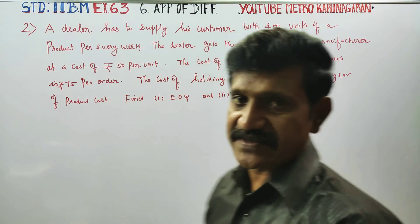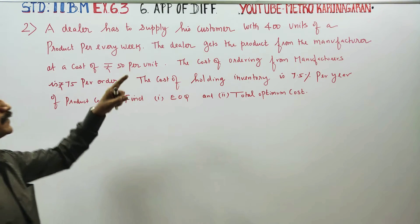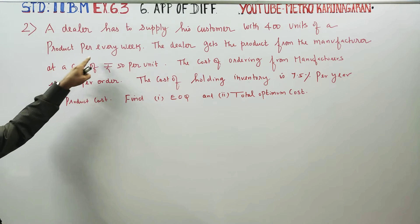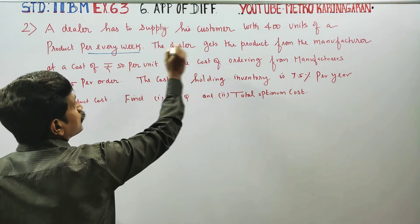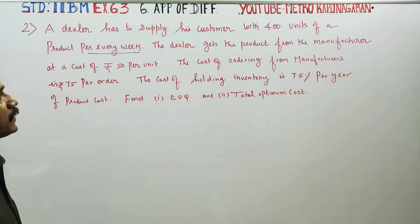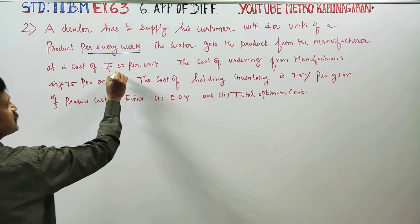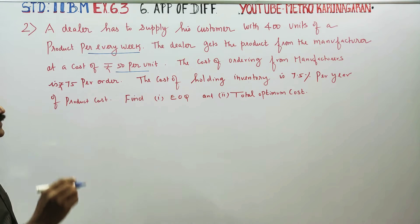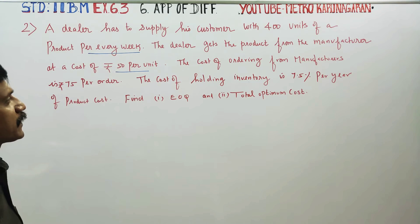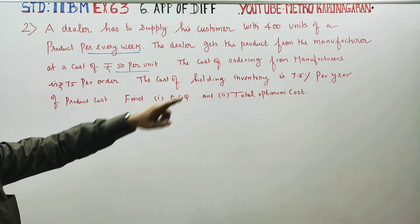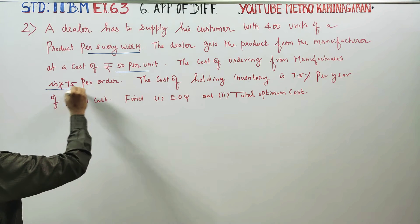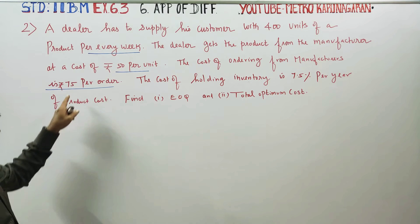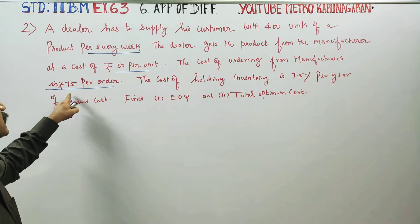A dealer has to supply his customer with 400 units of a product every week. The dealer gets the product from the manufacturer at a cost of Rs. 50 per unit. The cost of ordering from the manufacturer is Rs. 75 per order. This is a set-up cost.